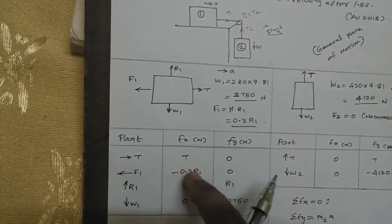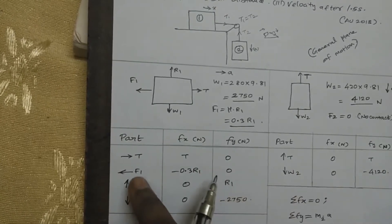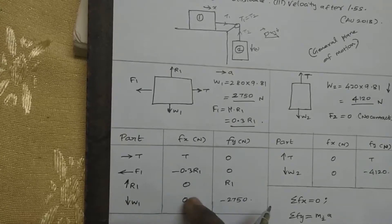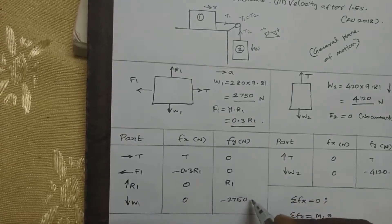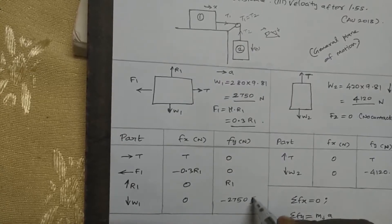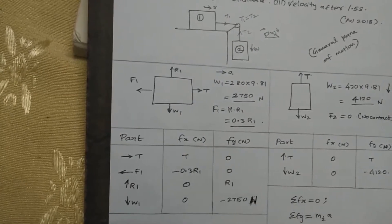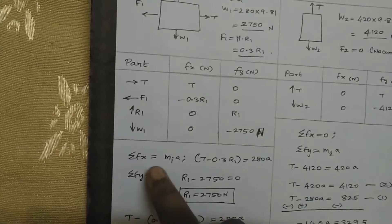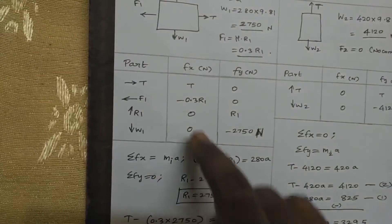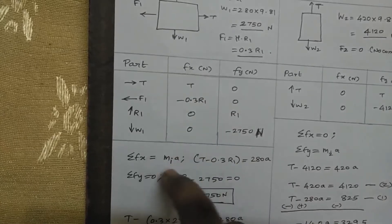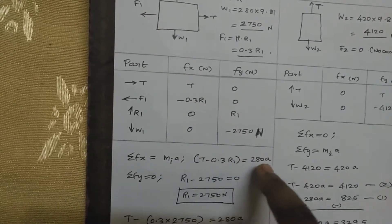F1 is going negative, minus 0.3 R1. R1 is going upward. W1 is going downward, which is 2750 Newton — actually, 2050 Newton. Summation of F in the x-direction equals M1 times A: capital T minus 0.3 R1 equals M times A. The value of M is 280 times A.